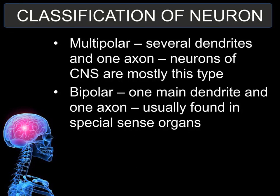There are two classifications of neurons. One is based on structure. Multipolar neurons are neurons that have several highly branched dendrites and one axon. These neurons are usually found in the central nervous system and are the most common type of neuron.